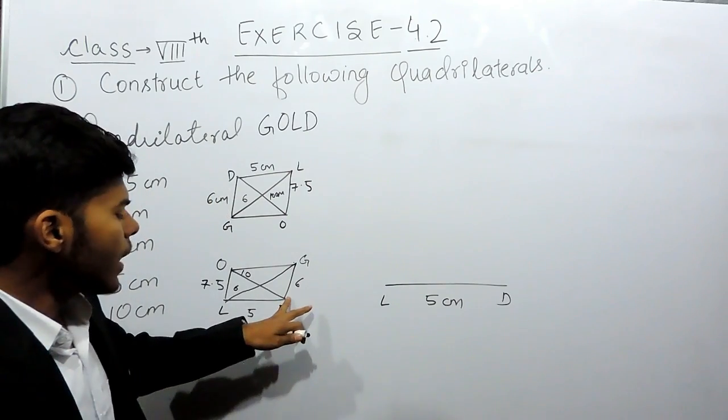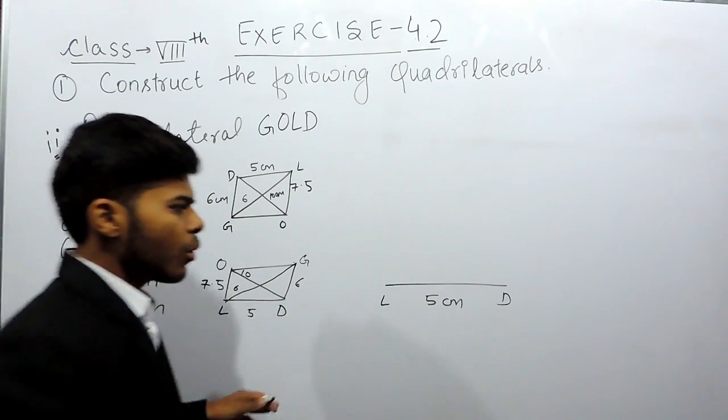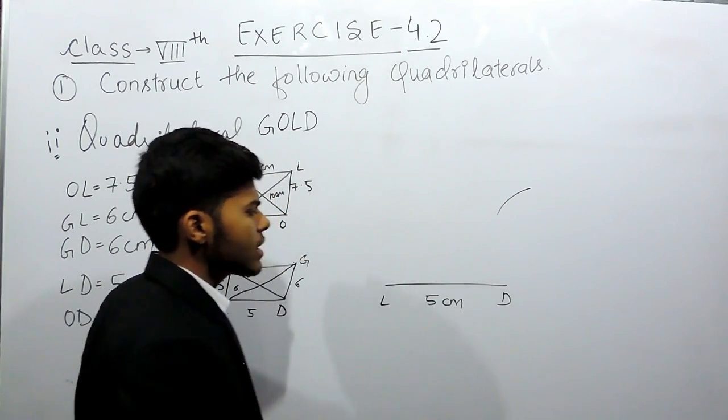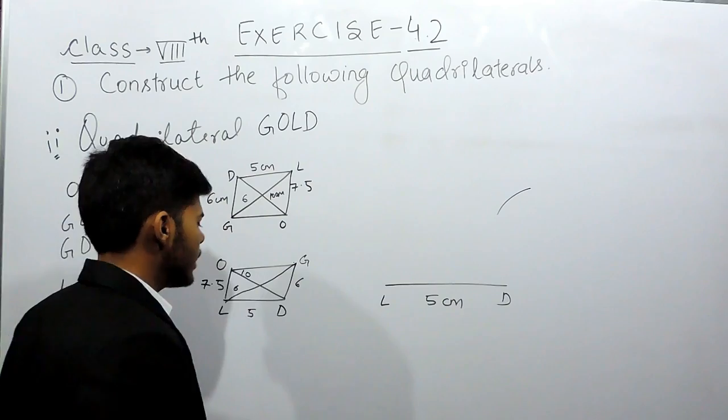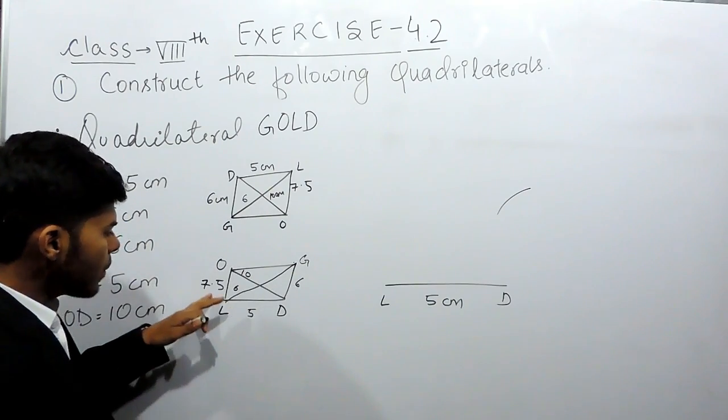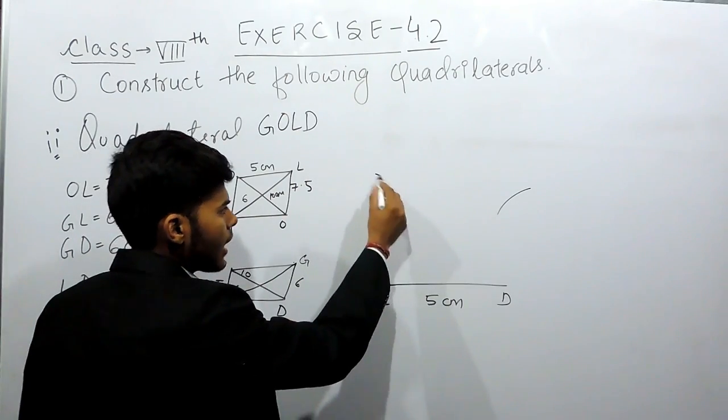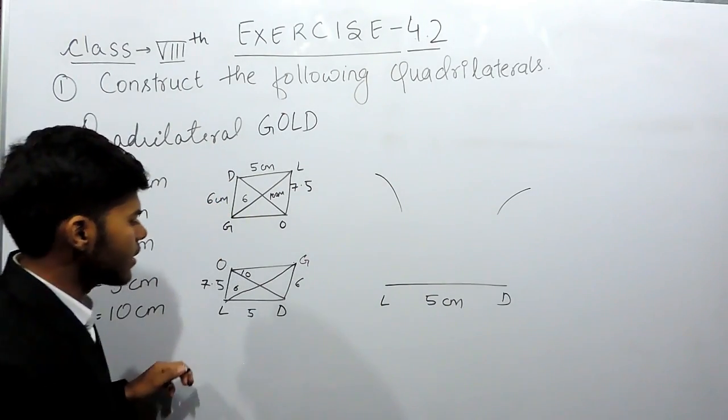Now we will open the compass to 6 cm, put it at point D, and make an arc of 6 cm. So this is an arc of 6 cm from point D. Now we will open the compass to 7.5 cm, keep it at point L, and cut an arc of 7.5 cm like this.